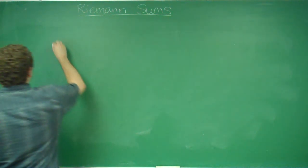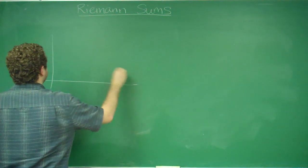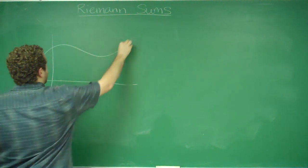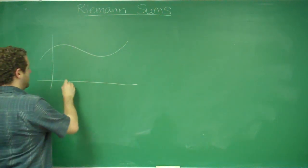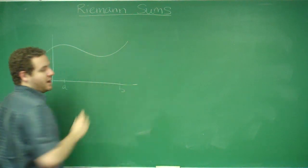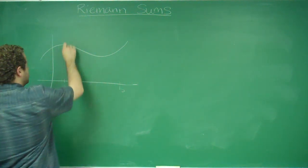So what I'm getting at here is, say we had some function, and it looked like this. And we wanted the area under this curve from A to B.